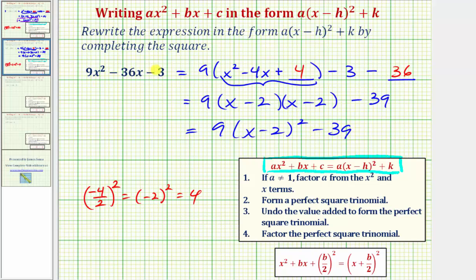We now have the given quadratic expression in the form requested, which is the form a times the quantity x minus h squared, plus k. We'll notice how a would be nine, h would be positive two, and k would be negative 39.